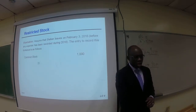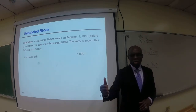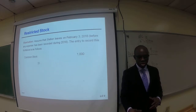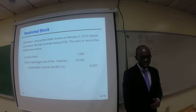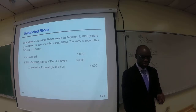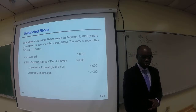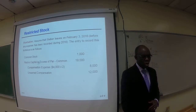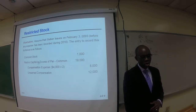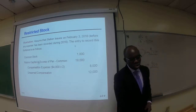Here is the entry to record the transaction in the event of forfeiture — assuming the CEO leaves the company in February 2016. We debit common stock, debit paid-in capital in excess of par for $19,000, credit compensation expense for $12,000 for the two years of expense that expired, and credit unearned compensation for $12,000 for the remaining unearned compensation.